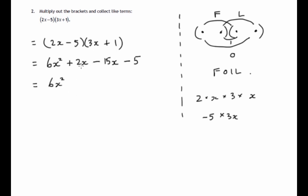So we've got 2x minus 15x. So 2 minus 15, that'll be minus 13. Remember, take away 15 on the number line from 2, 15 steps to the left, you'll be at minus 13. So 2x minus 15x is minus 13x minus 5.